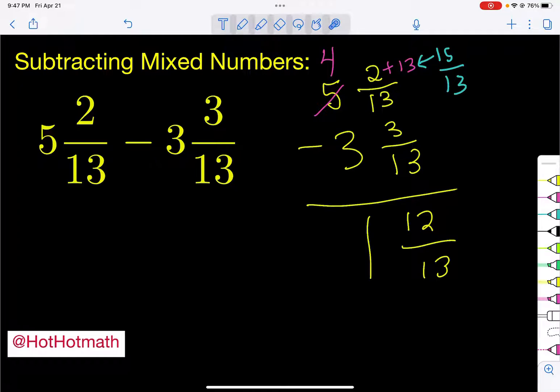Now that's our answer. I always kind of check, is there anything that I can do to this? 12 thirteenths cannot change. So I'm going to leave it. And that is our final answer. So our answer is 1 and 12 thirteenths.